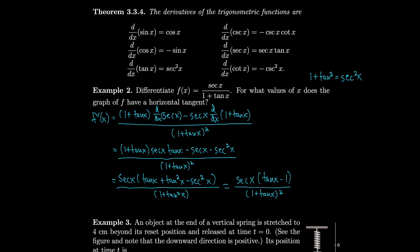We want to know when this has a horizontal tangent, so when the derivative is 0. It's 0 when the numerator is 0. Since secant is never 0 (because secant is 1 over cosine and the numerator 1 is never 0), we need tangent x equals 1. Tangent is 1 when sine equals cosine, which happens at pi over 4 — where they're both root 2 over 2. It also happens every pi after that, since rotating 180 degrees around the circle gives another point where tangent equals 1. So all x values are pi over 4 plus n pi, for n in the integers.